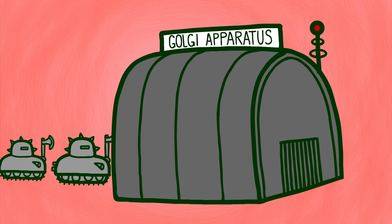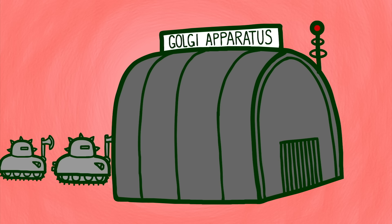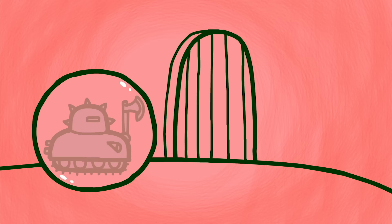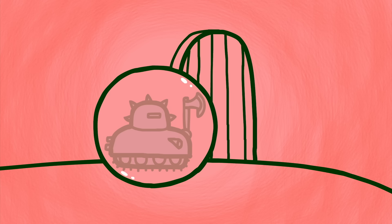But before it can do that, the antibody needs to leave the cell. The antibody heads to the Golgi apparatus. Here, it's packed up for delivery outside the cell, enclosed in a bubble made of the same material as the cell membrane. The Golgi apparatus also gives the antibody directions, telling it how to get to the edge of the cell.